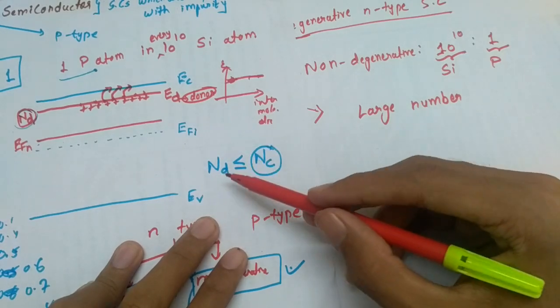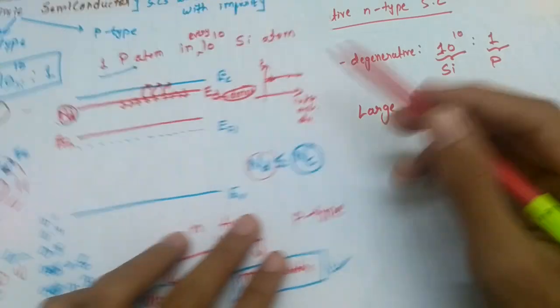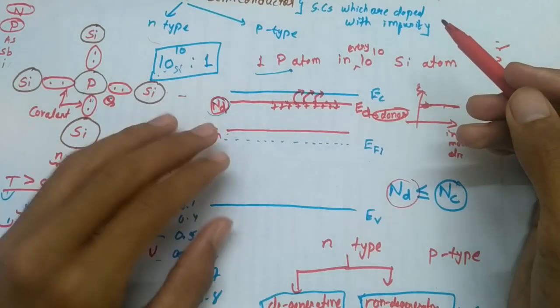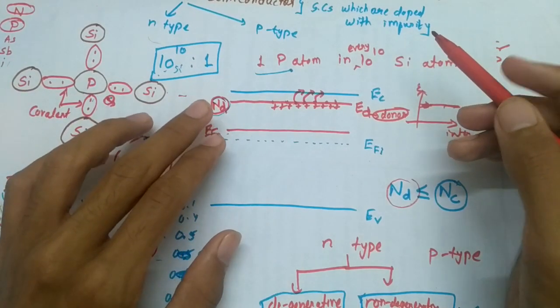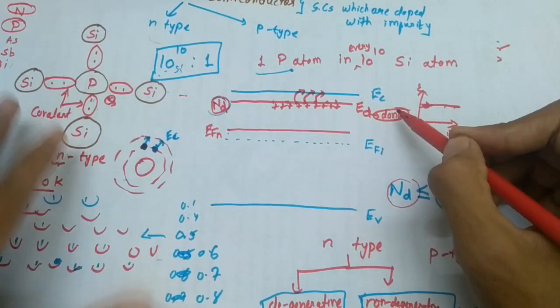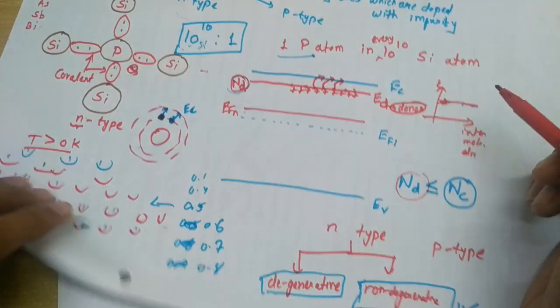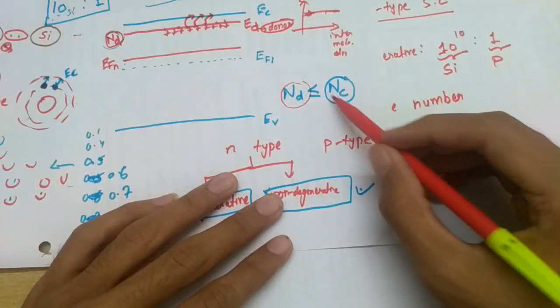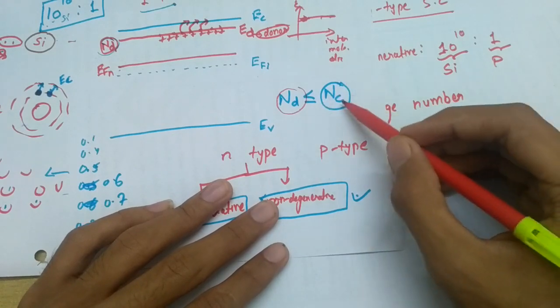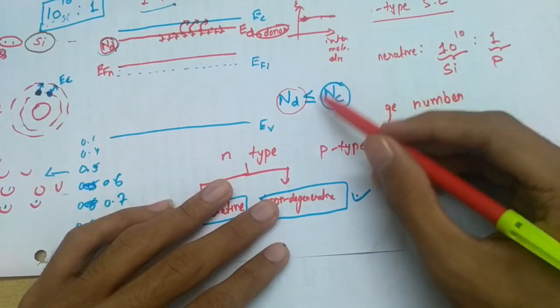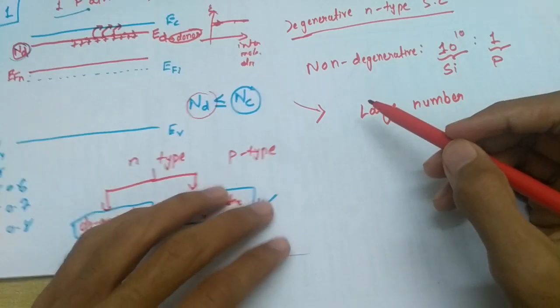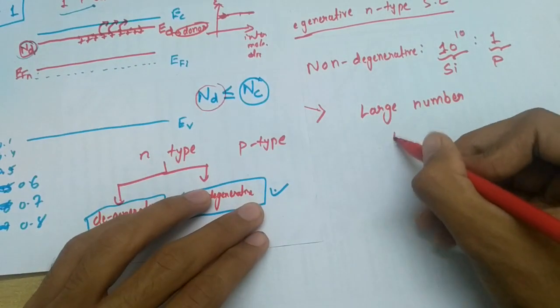That is ND, the donor impurity concentration, is less than or maximum it can be equal to NC, that is effective number of states in valence band. But in case of degenerative, this condition will be opposite. That is ND can be greater than NC.